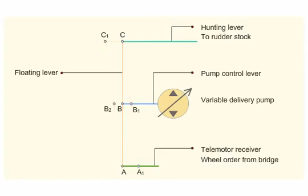When wheel order is starboard, the telemotor control moves the floating lever to A2 and the floating lever controls the pump discharge according to the feedback received from the hunting lever.